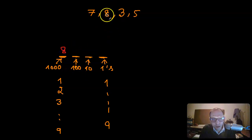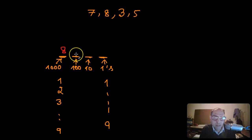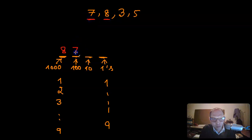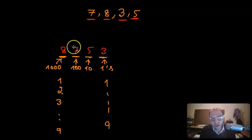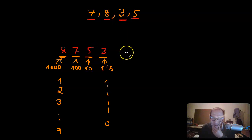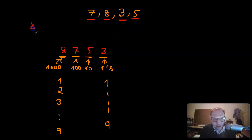So I take the eight and put it in the thousands place. Then the same logic applies - the remaining largest place value available gets the next largest digit, which is seven. I put it there, then pick five which is greater than three and place it next, then put the three last. The number becomes eight seven five three - and that is the largest number you can make using these digits.